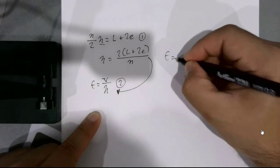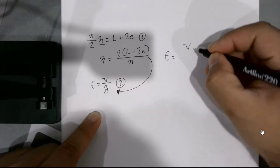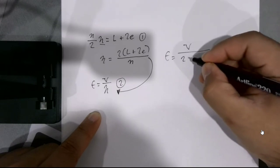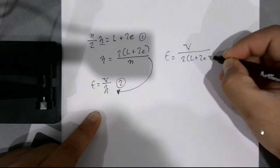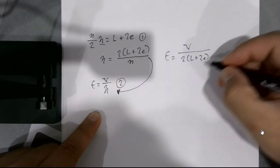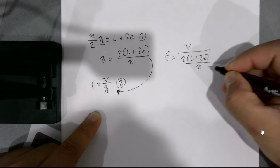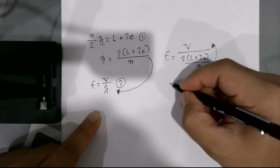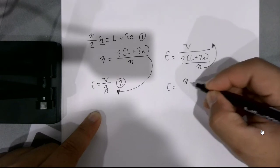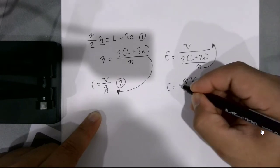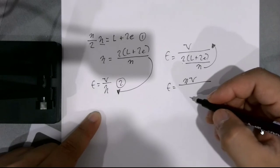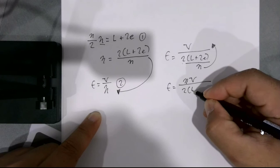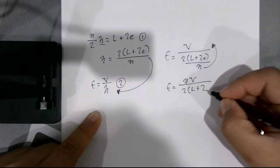Frequency is equal to the speed of sound in air divided by two L plus two E over n. Then n comes to the numerator. So we end up getting F is equal to the harmonic multiplied by the speed of sound in air divided by two L plus two E.